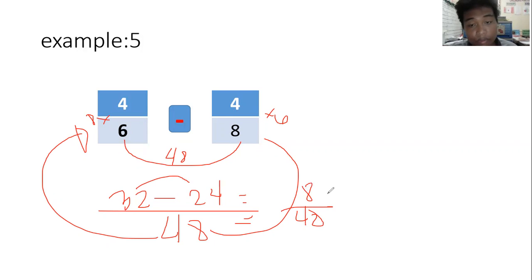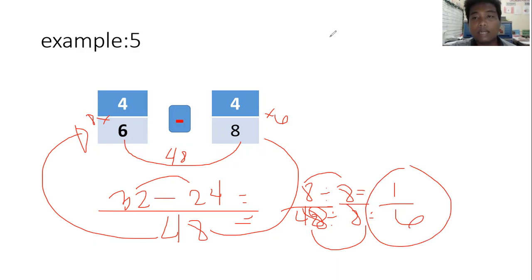Can we simplify eight-forty-eighths? Yes. What number? Can we use two? Can we use six? No, not six. We can use two for both numbers, but that takes long. Not three, not four, not five, not six. Eight works. Eight divided by eight equals one, and forty-eight divided by eight equals six. So the answer is one-sixth.